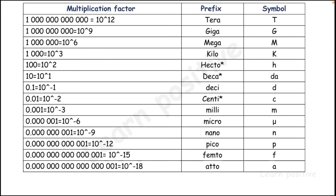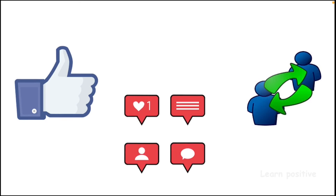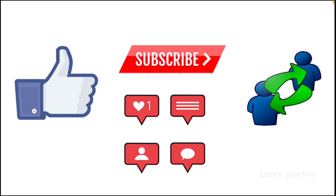The symbols for these prefixes are: tera T, giga G, mega M, kilo k, hecto h, deca da, deci d, centi c, milli m, micro μ, nano n, pico p, femto f, and atto a. This is the end of Chapter 1. In the next video we are going to see Chapter 2 of Unit 1, which is statics. Please like, share, comment, and subscribe to my channel. Thank you.